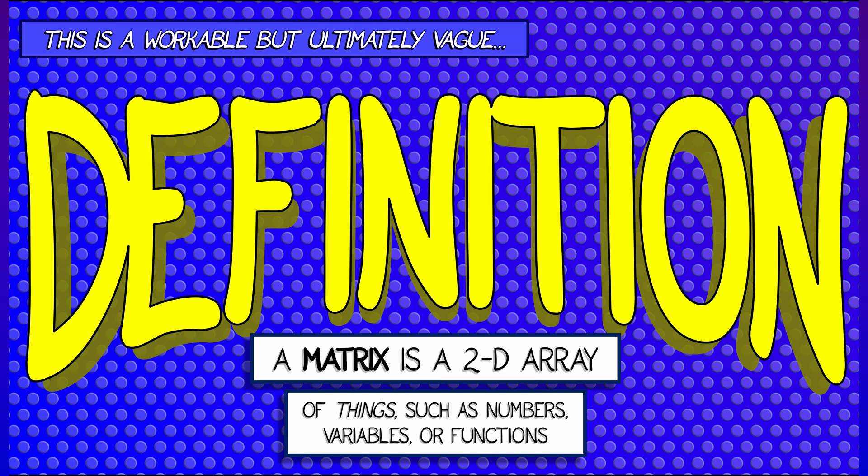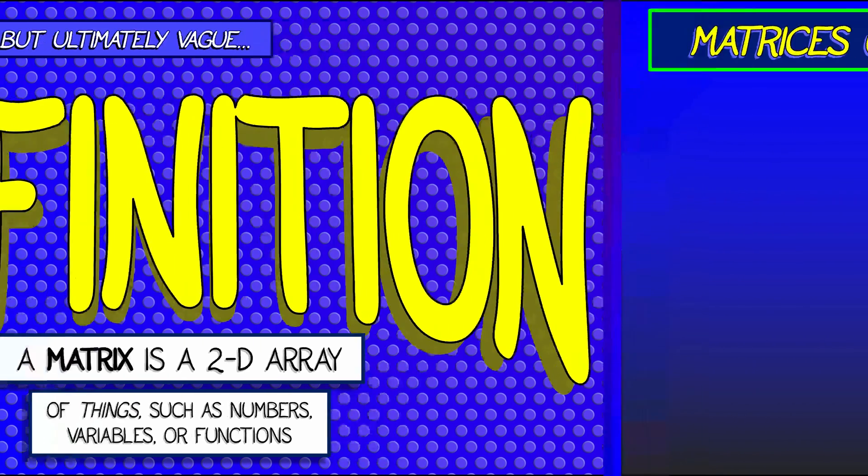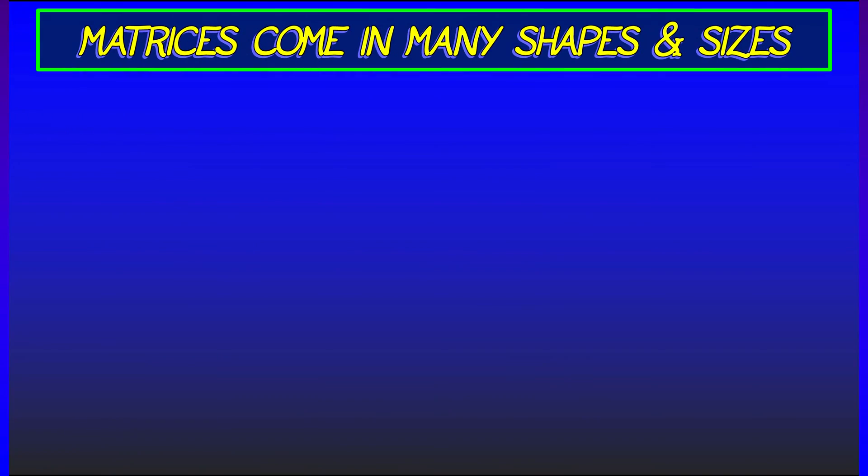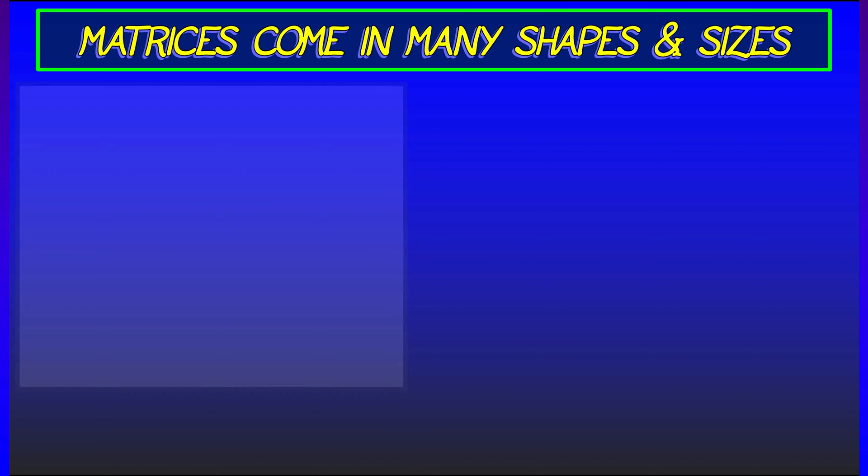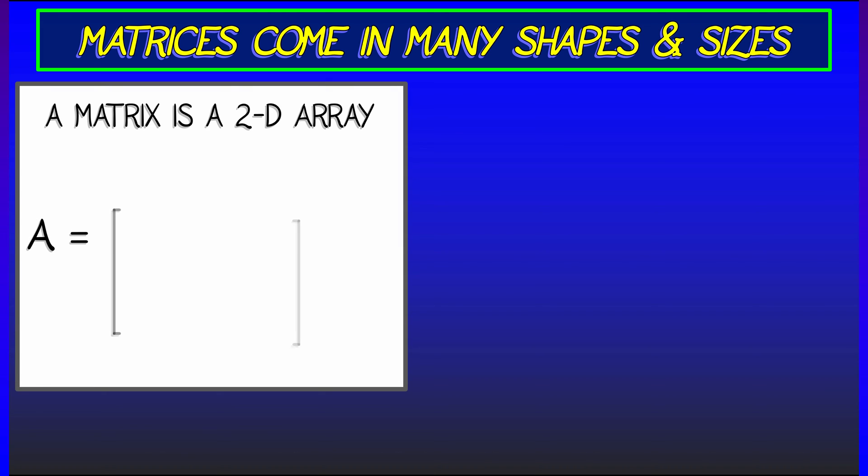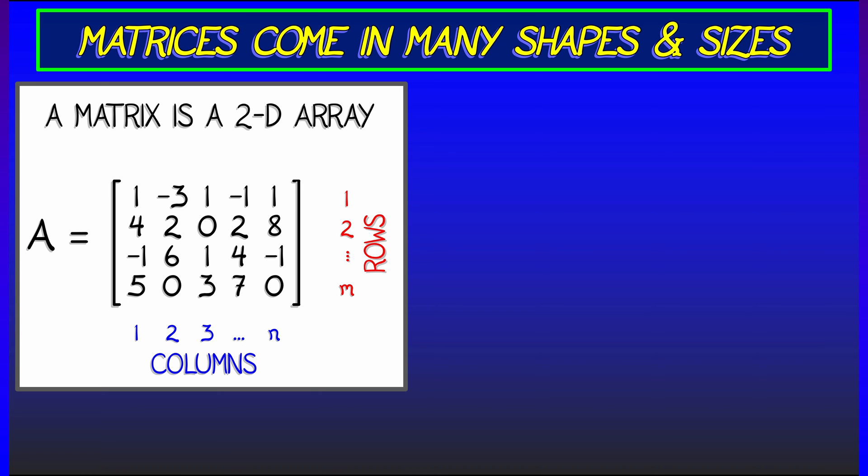The thing about matrices is they come in many shapes and sizes. For example, here is a matrix with five columns and four rows. In general, you have n columns and m rows.